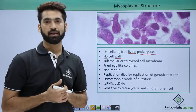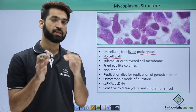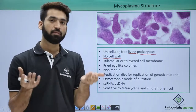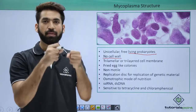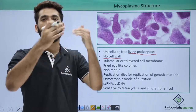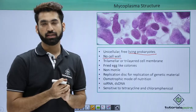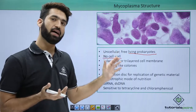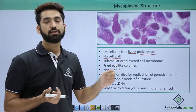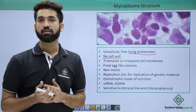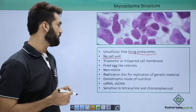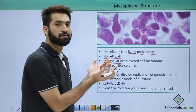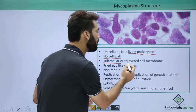Because mycoplasma are smaller than bacteria, they can cross bacterial proof filters. Bacterial proof filters trap bacteria but allow everything smaller than bacteria to pass through. So mycoplasma, being smaller than bacteria, can cross these bacterial proof filters.